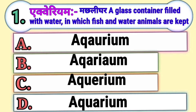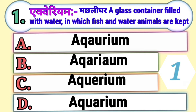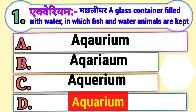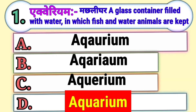Question 1. Aquarium — a glass container filled with water in which fish and water animals are kept. Choose the correct spelling of aquarium. Option A, Option B, Option C, and Option D. The correct answer is Option D, Aquarium.